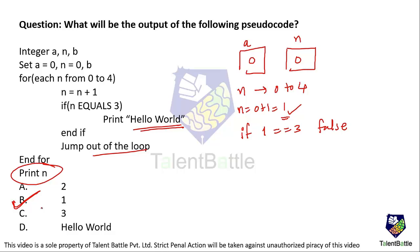To confirm: n is initialized to 0 in the for loop, then n equals n plus 1 updates n to 1. Since n is not equal to 3, the else part executes, jumping out of the loop. Finally, we print the current value of n, which is 1. So the final answer is 1, option B.